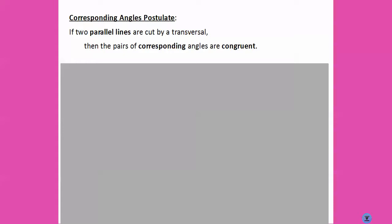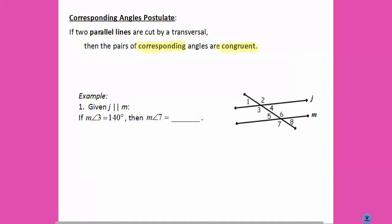Our first postulate — which in math, postulate just basically means rule — is: if two parallel lines are cut by a transversal, then the corresponding angles are congruent, so they're the same measure. Given that line J is parallel to line M, and we mark that with little triangles on them to give us a visual marking that they are parallel, angle three and angle seven, since they are corresponding, will have the same measure.